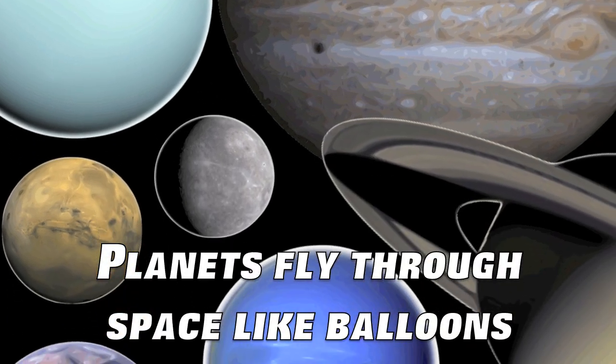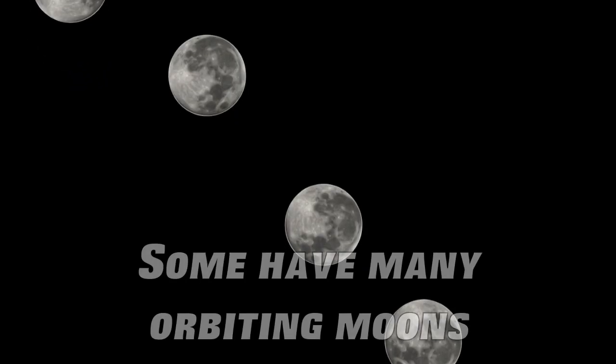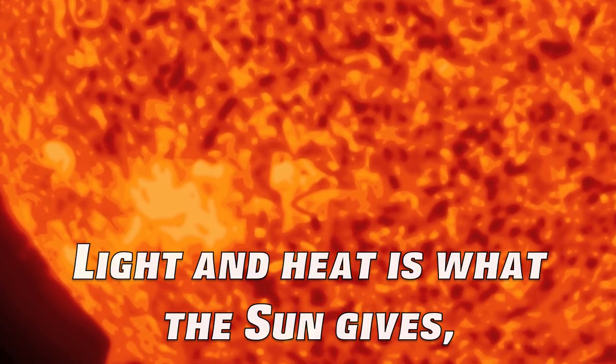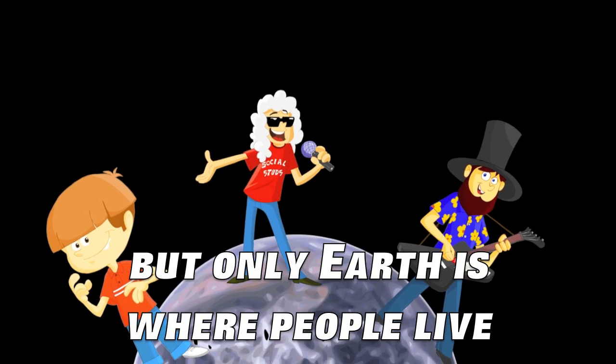Planets fly through space like balloons. Suns have many orbiting moons. Light and heat is what the Sun gives, but only Earth is where life fully lives.